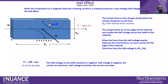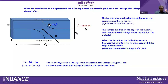What is Hall Effect? When the combination of a magnetic field and flowing current in a material produces a new voltage, it is called Hall Effect. Consider a sample with thickness t and width w. A magnetic field is applied perpendicular to the sample and current is flowing from left to right, Ix. In this example, consider a charge carrier which is an electron. In a magnetic field it will experience a Lorentz force given by evxB, where vx is the drift velocity.